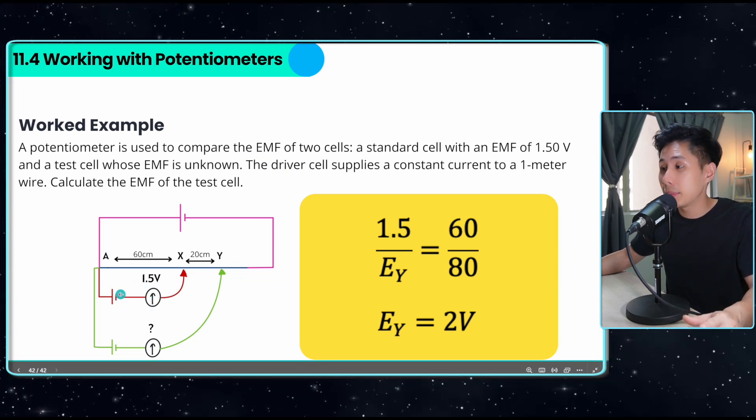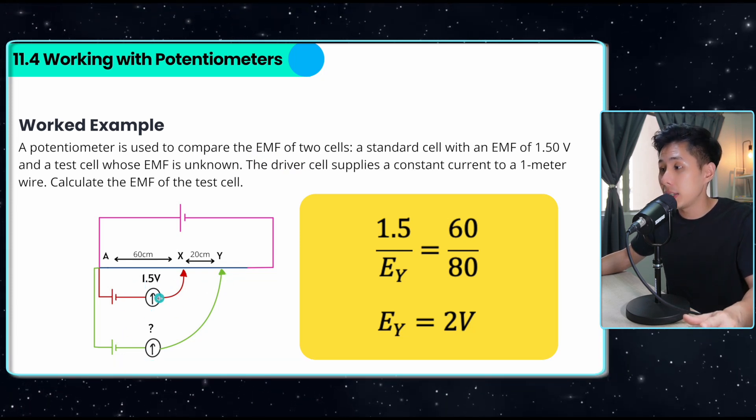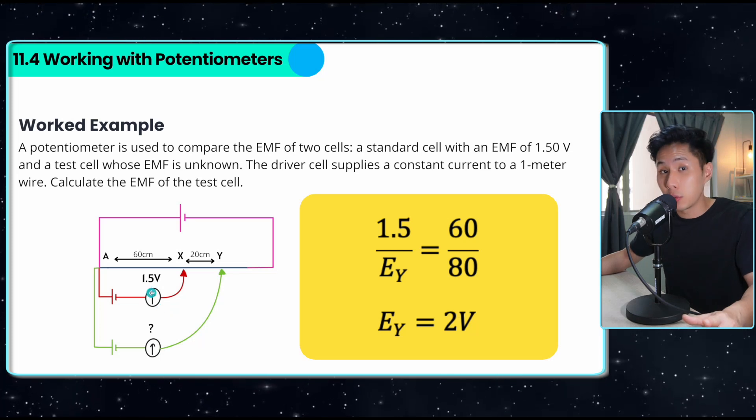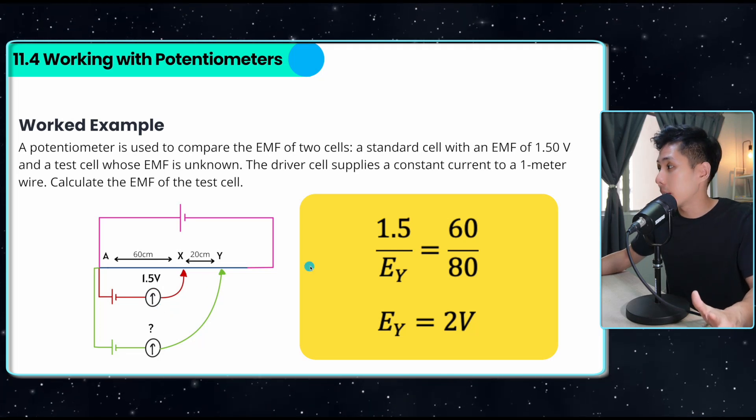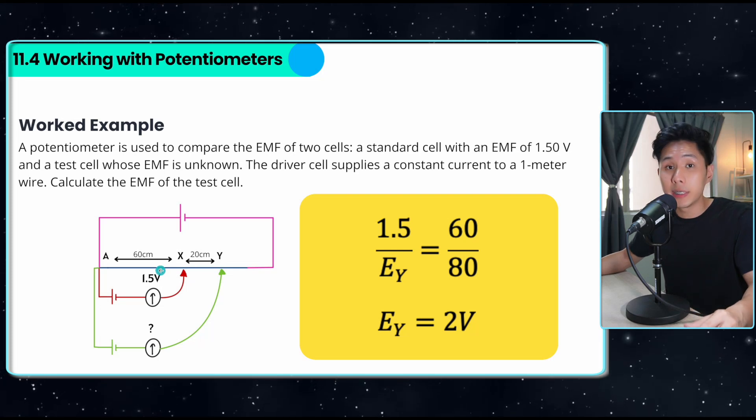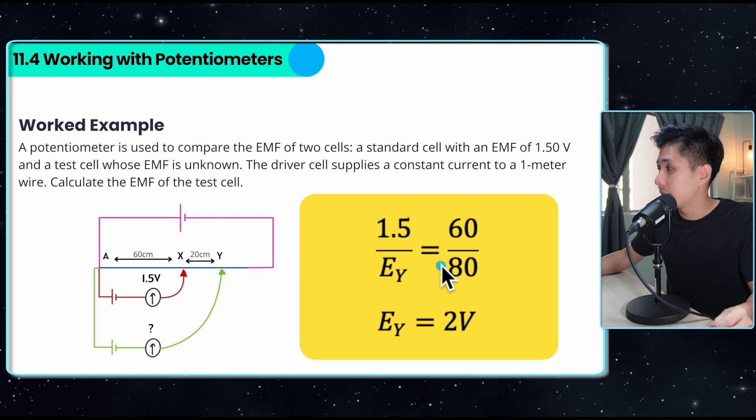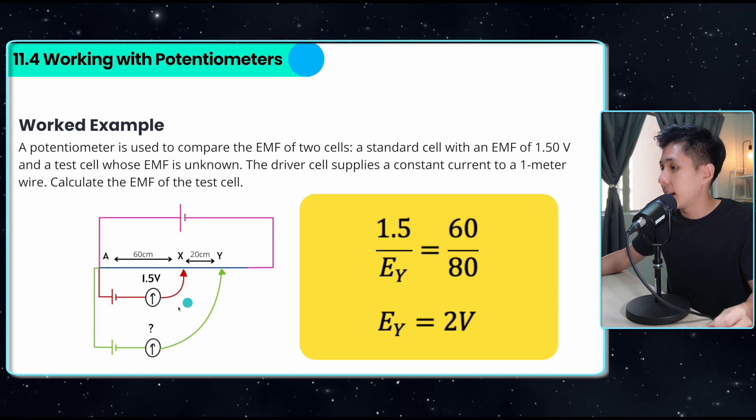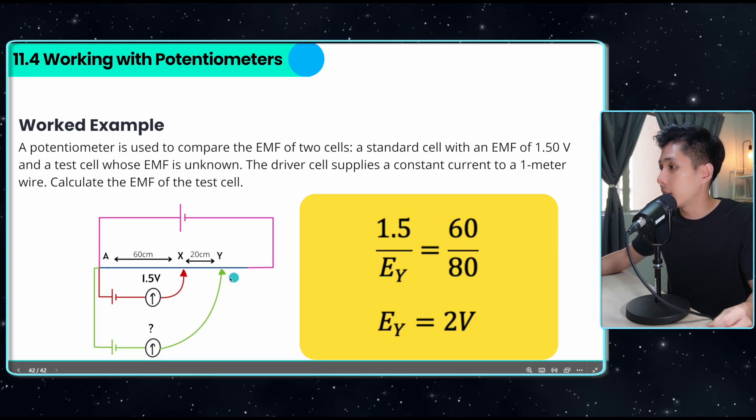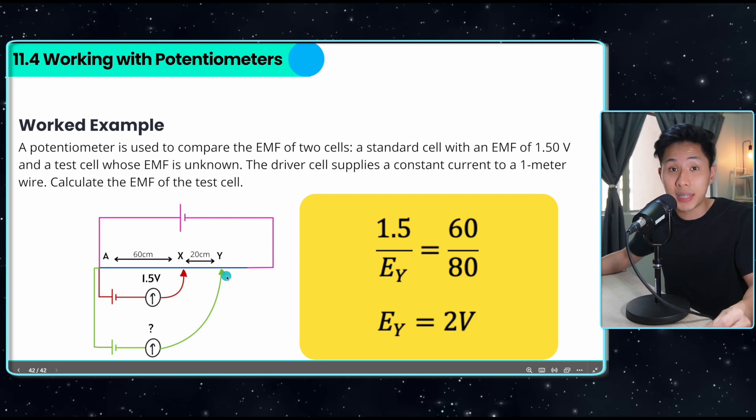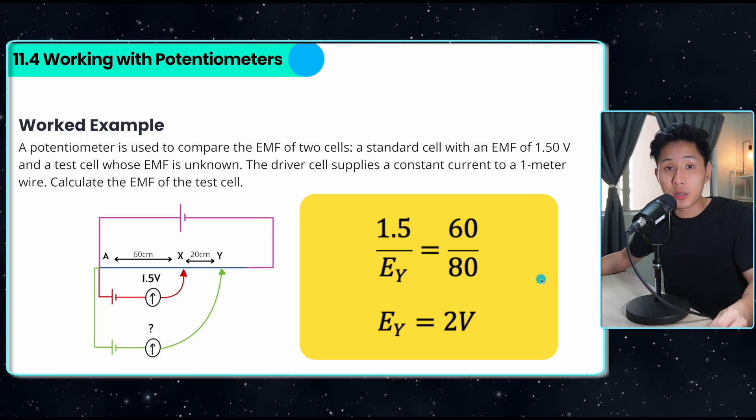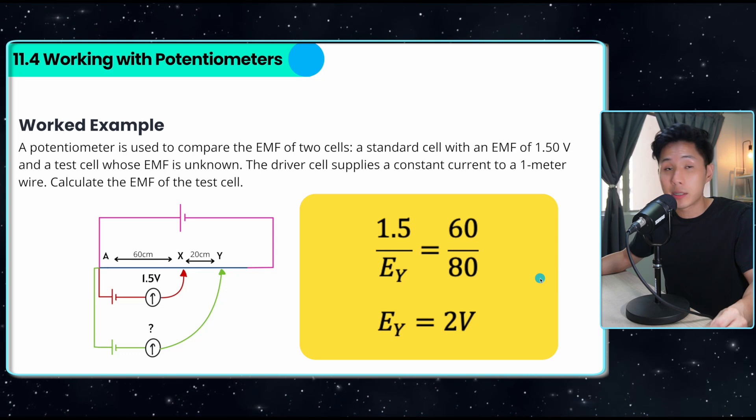What I can do is simply connect them into two different points where the galvanometer stopped moving, stopped deflecting, and then just look at the length. We know that resistance is proportional to the length of the wire. This is why I can use this equation to calculate the EMF of this cell based on where they are in contact in the line. That's pretty much it on potentiometer and the end of this chapter.